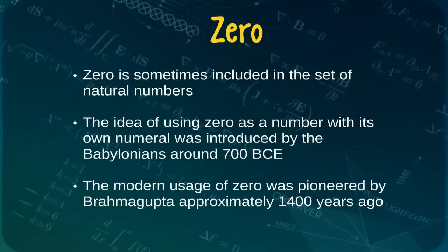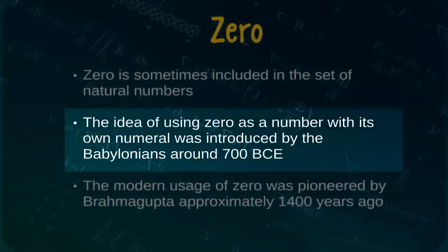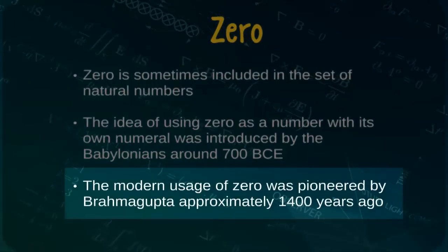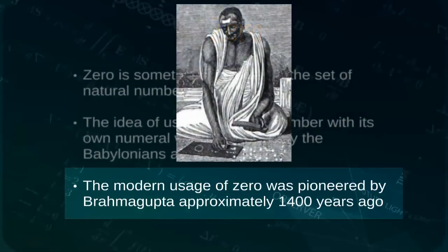Although zero is sometimes included in the set of natural numbers, it has an interesting history and therefore deserves a few moments of our attention. Well-defined systems of numerals date back at least 3,500 years to the ancient Egyptians. However, it was not until approximately 2,700 years ago that the idea of using zero as a number with its own numeral was first developed by the Babylonians.